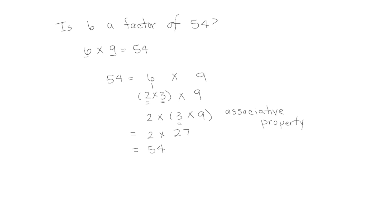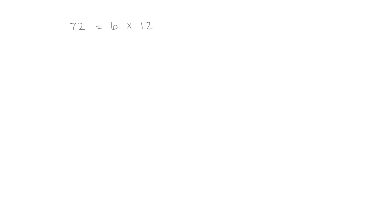Let's look at 72, and we want to know if 6 is a factor. We know from our math facts that 6 times 12 is 72, so both 6 and 12 are factors of 72. Now we're going to check whether 3 is also a factor using the associative property. We change 6 into 2 times 3, then associate 3 with the 12. When I multiply, I get 72. So now I know both 2 and 3 are factors of 72.